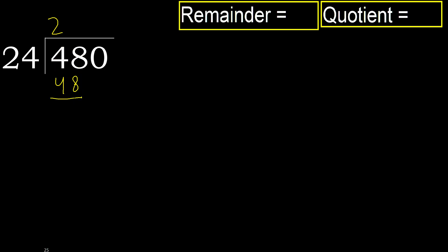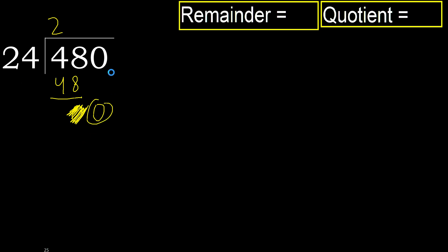48 minus 48 is 0. Next, bring down the 0 on this side. 0 is less, therefore next — that is not a number.